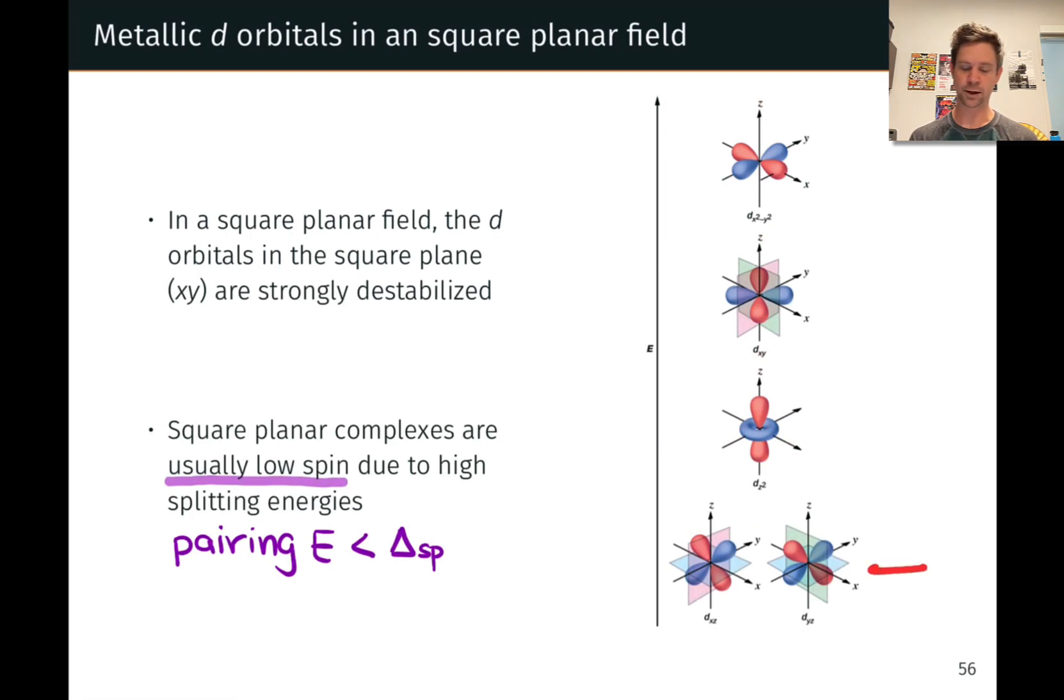For example, in the d⁴ case, we're going to end up putting all four electrons in these lowest two energy orbitals before moving up to the higher energy orbitals, since this gap here is relatively large in the square planar geometry, as a rule.